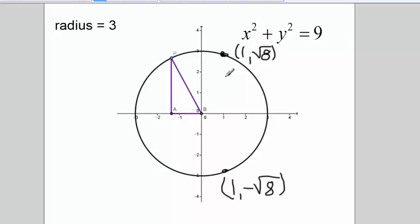So we have lots of symmetry in a circle. So we have this point up here and we have this point down here, 1 comma negative square root of 8. We could also have a symmetrical point over here which would be negative 1, negative square root of 8. And we could have a point up here, negative 1, positive square root of 8.